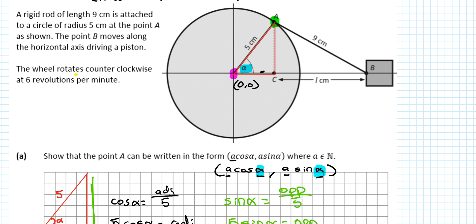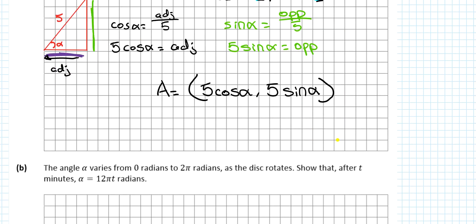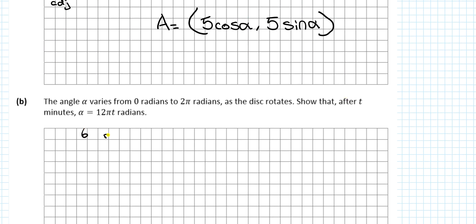We know the wheel rotates counterclockwise 6 revolutions per minute. So in one minute: 2π, 4π, 6π, 8π, 10π, 12π. So in a single minute it goes 12π. So 6 revs per minute, that's 6 times 2π per minute, so 12π per minute. So α is going to be 12πt radians per minute.